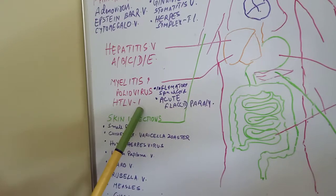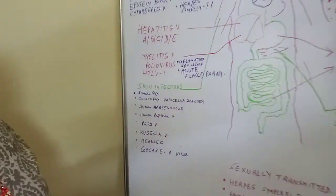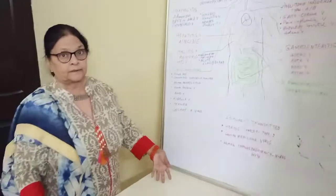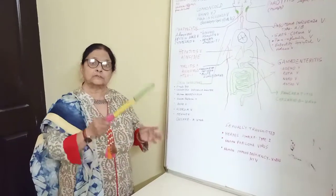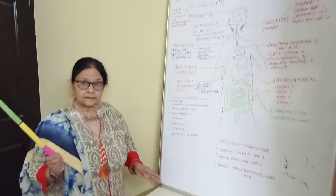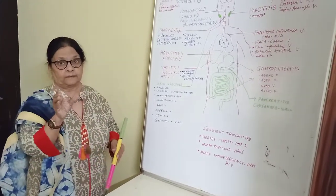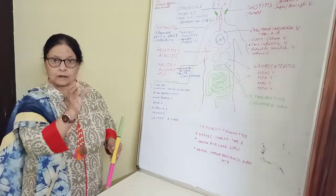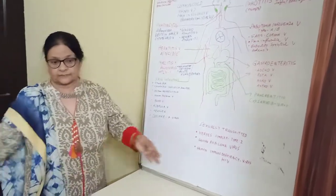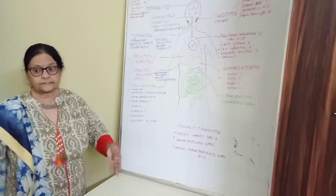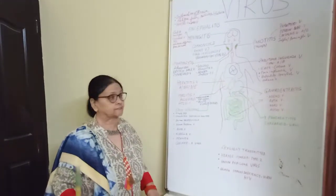The symptoms of polio include inflammation of the spinal cord. The spinal cord runs through the vertebral column and is an extension of the brain — specifically the medulla oblongata. Hence the lateral parts, that is, the limbs — hands and legs — are affected, leading to paralysis.